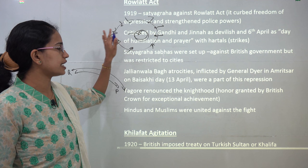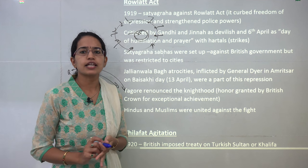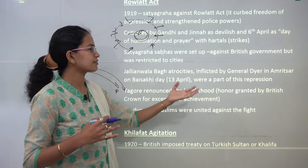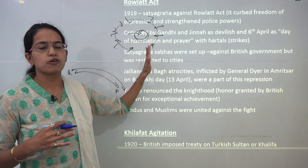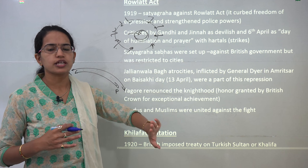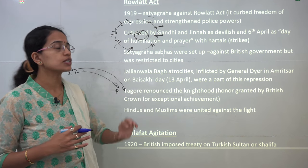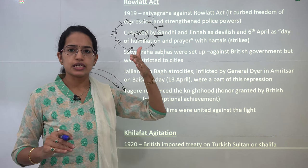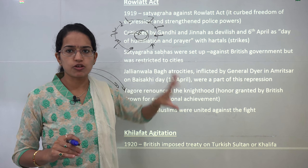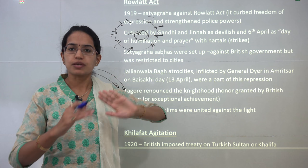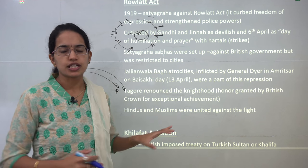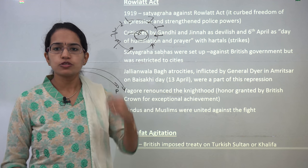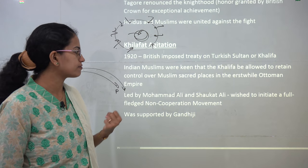Considering the atrocities that took place, Rabindranath Tagore renounced his knighthood — an honour granted by the Britishers — saying he no longer wanted it. This was a move that brought Hindus and Muslims together again. During the partition of Bengal, separate electorates for Muslims had been started. But at Jallianwala Bagh, both Hindus and Muslims sacrificed their lives together. So Hindus and Muslims joined hands again and united for a common cause.